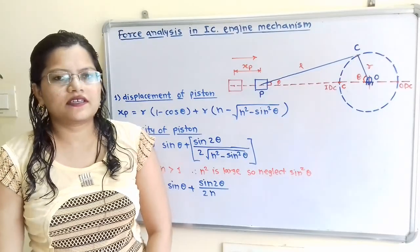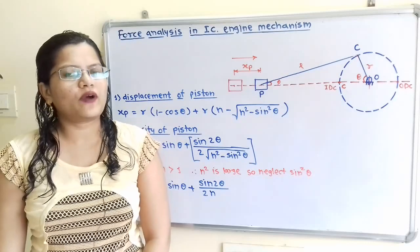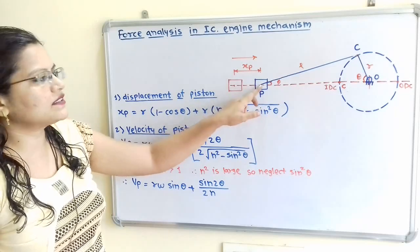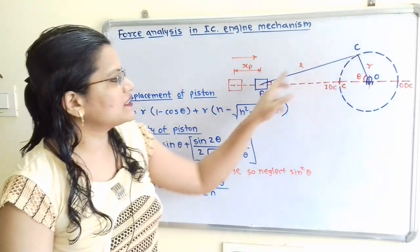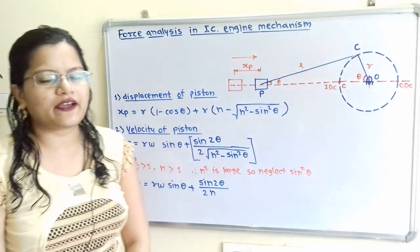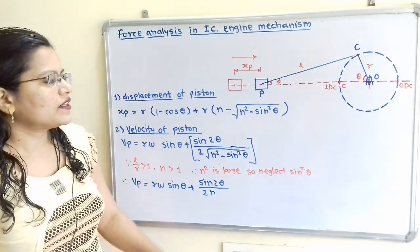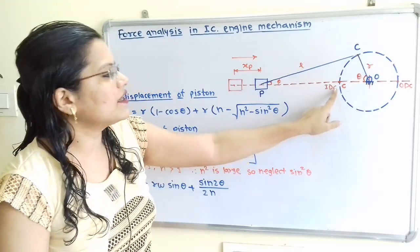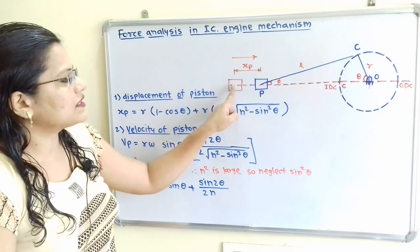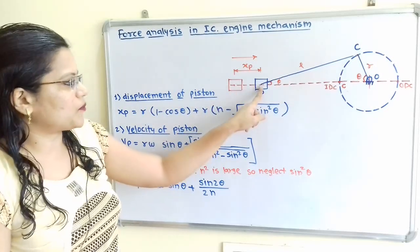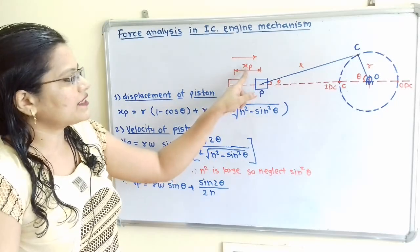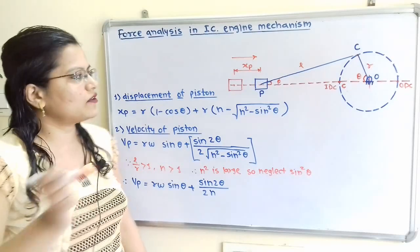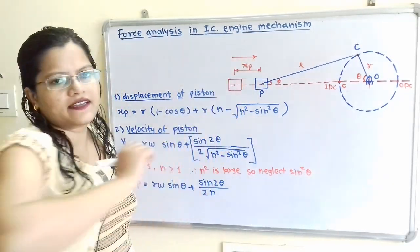Let us understand some important formulae related to IC engine mechanism with the help of a diagram. This is the piston-cylinder arrangement. P to C is the connecting rod and O to C is the crank of radius R. As the crank rotates through angle theta from the inner dead center, the piston gets displaced, shown as XP. The direction of movement of the piston is towards the right hand side.